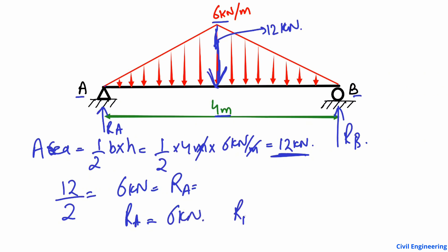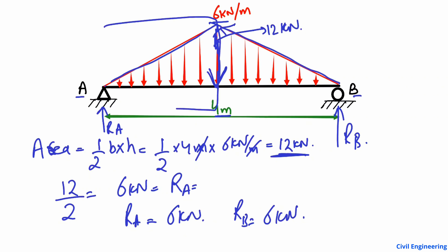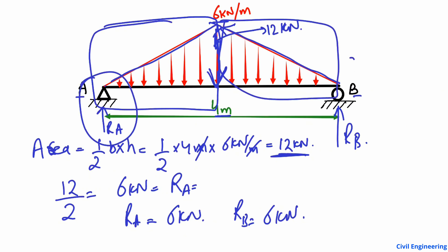RB also equals 6 kilonewtons. This is because the load is symmetrical — the load increases up to the midpoint and then increases again from the midpoint to the other end. This half of the load acts on support A and this half is resisted by support B.